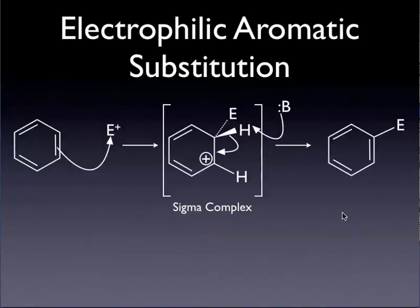This is the general scheme we follow every time we're talking about electrophilic aromatic substitution. We'll change the electrophile occasionally, but the mechanism is going to be the same: disrupt the pi system, generate a sigma complex, and then deprotonate to regenerate our aromatic molecule. What we'd like to do now is look at what the effects of substituents on our benzene ring are.